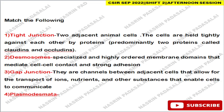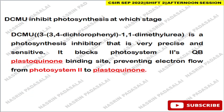Next: a question on extracellular matrix and cell junctions — a match-the-following. Tight junctions form a junction between two adjacent animal cells, held tightly by proteins including claudins and occludins. Desmosomes are specialized, highly ordered membrane domains that mediate cell-to-cell contact and strong adhesion. Gap junctions are channels between adjacent cells allowing transport of ions, nutrients, and other substances enabling communication. Plasmodesmata have the same function as gap junctions but are present in plants.